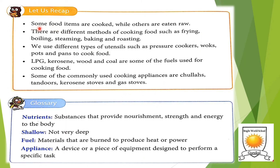Let's recap our lesson number two. Some food items are cooked while others are eaten raw — for example, fruits. There are different methods of cooking: frying (example: samosa), boiling (example: potatoes), steaming (example: dhokla), baking (example: cake), and roasting (example: paneer tikka). We use different utensils such as pressure cookers, woks, pots, and pans to cook food. LPG, kerosene, wood, and charcoal are some fuels used for cooking. Commonly used cooking appliances include chulhas, tandoors, kerosene stoves, and gas stoves.